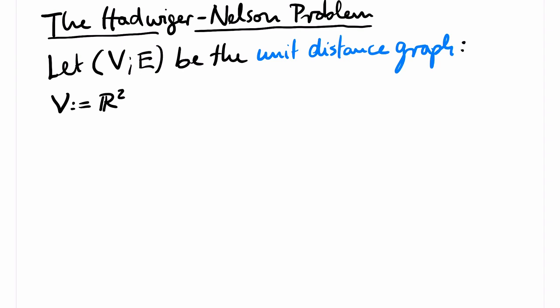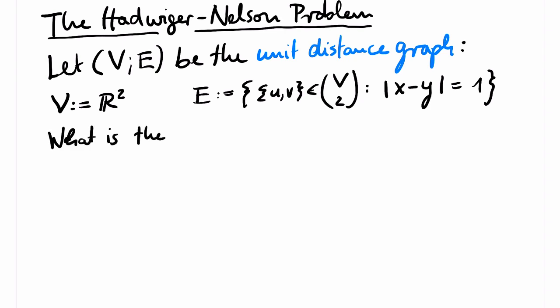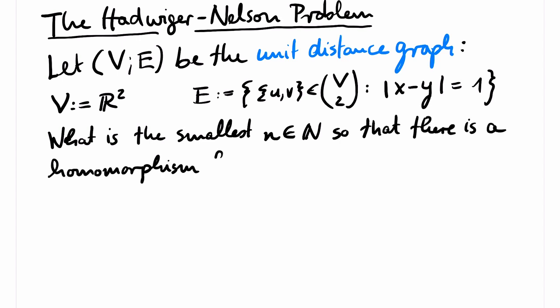The vertices of this graph are all points in the plane. So the graph has a lot of vertices. We put an edge between two points if the points are at distance one in the plane. The question is now, what is the smallest number n so that there is a homomorphism from the unit distance graph to kn?